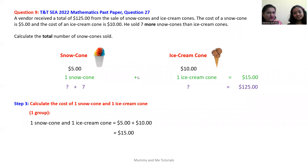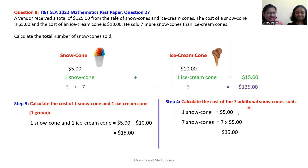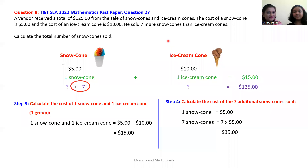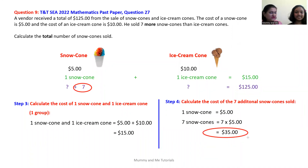The vendor sold some unknown amount of snow cones and the same unknown amount of ice cream cones, plus an additional seven snow cones. Step four is to calculate the cost of the seven additional snow cones sold. The cost of one snow cone equals $5, hence the cost of seven snow cones equals 7 multiplied by $5, which is $35.